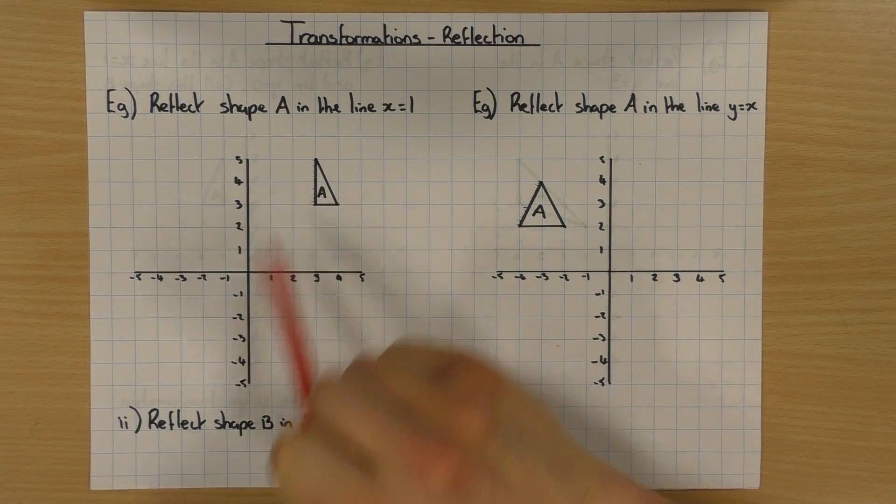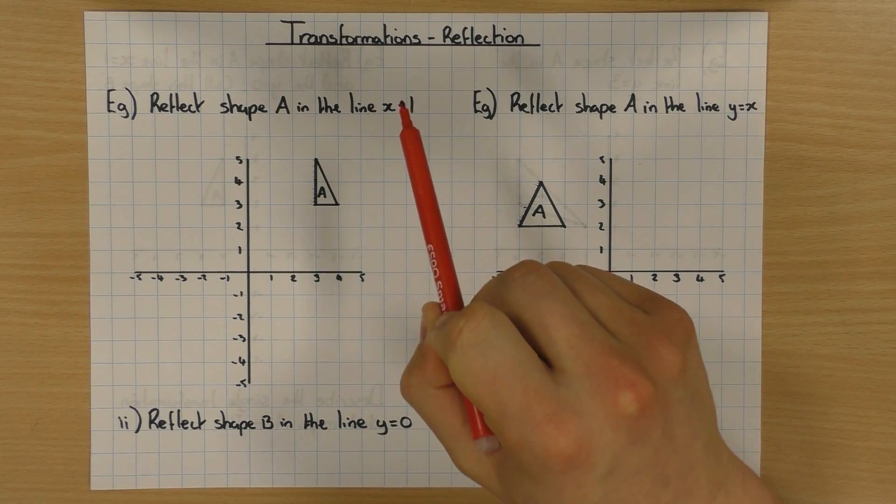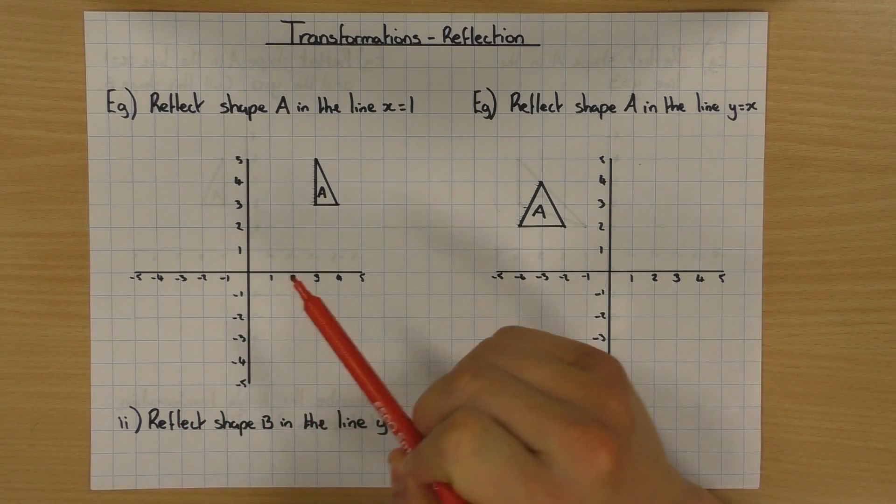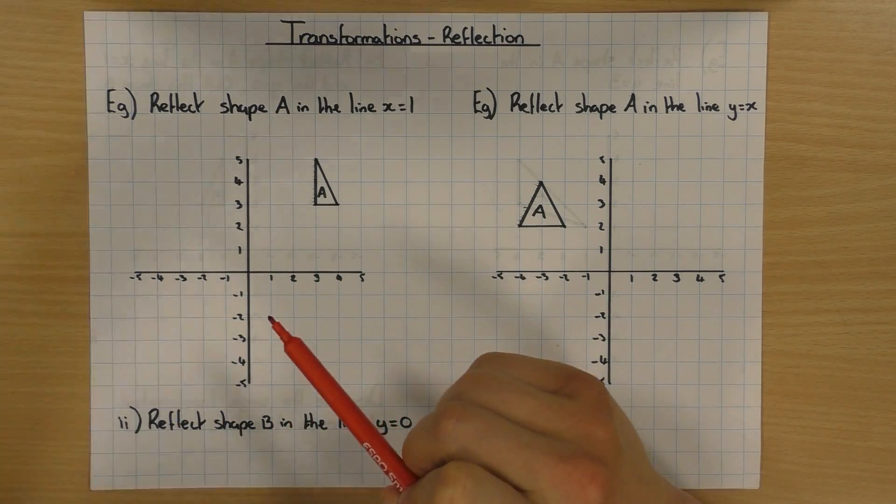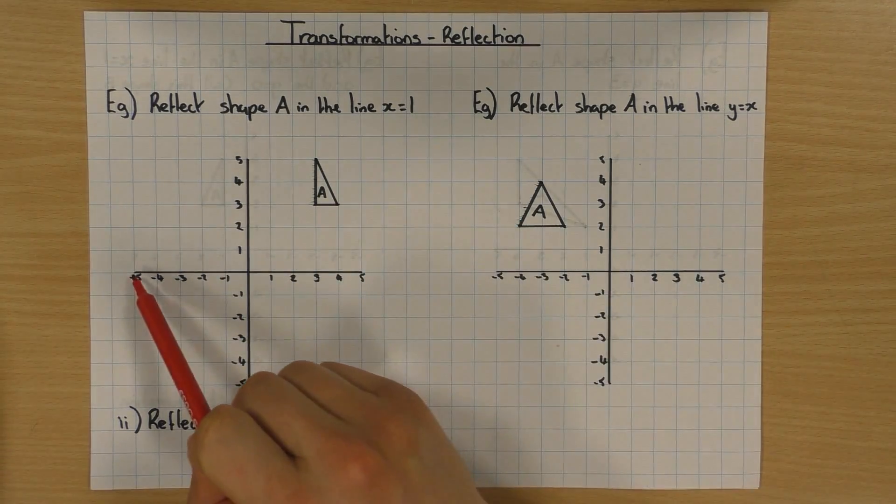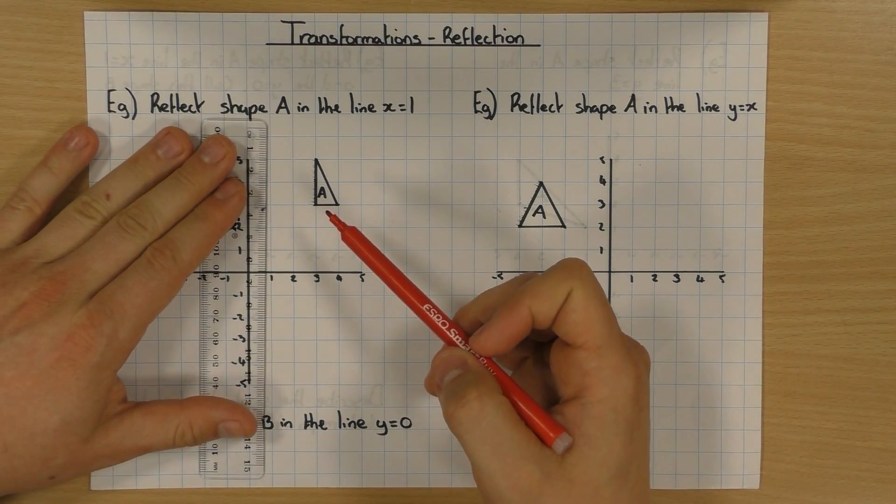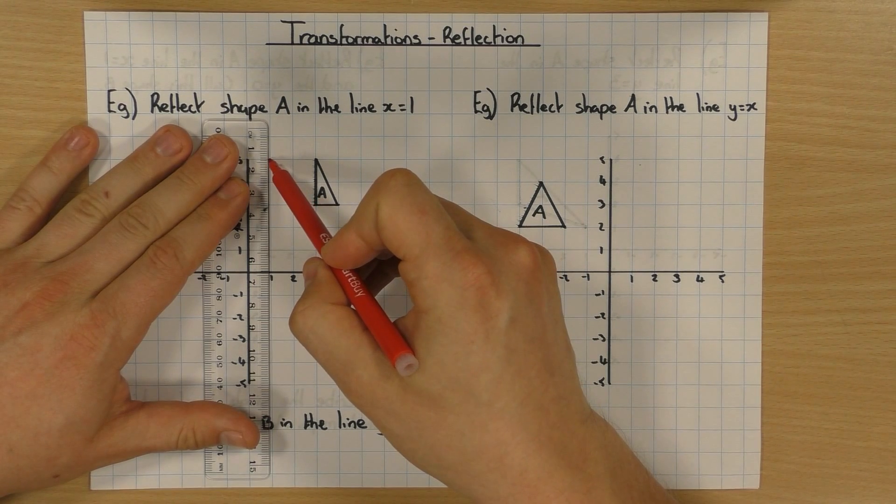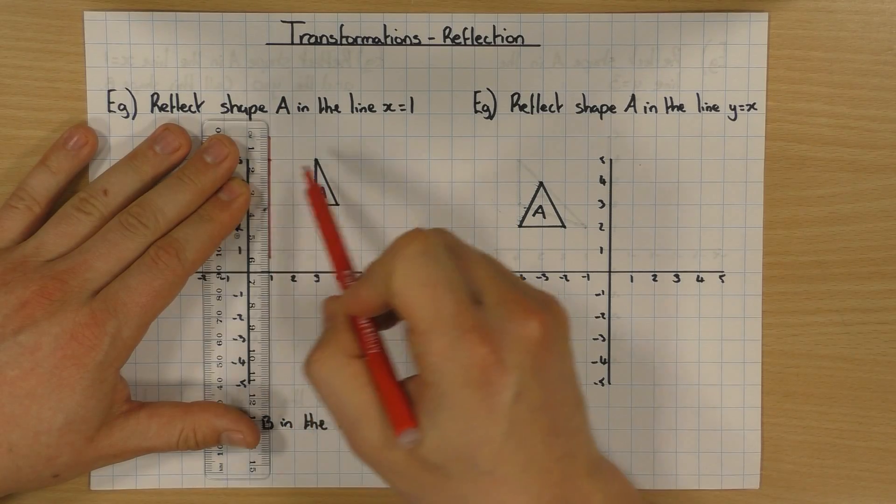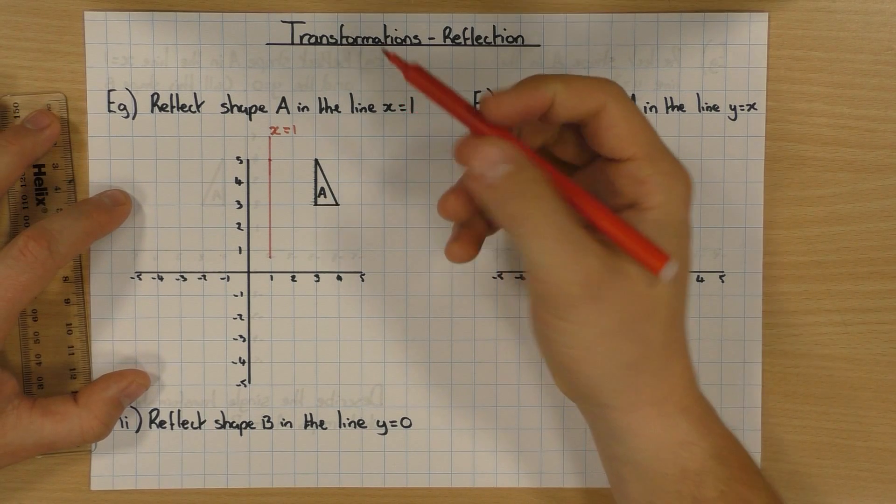So the first one here, I've got my shape A and I want to reflect A in the line X equals 1. In this particular example, I haven't given you the line to reflect it in, we've got to know what that is. It's really nice and easy. So X equals 1, I look to the X axis. X equals 1 is here, so all I do is a nice vertical line going through there. I'm not going to do it all the way because obviously my shape is just here, and I'm reflecting in that line. So X equals 1. Why is that X equals 1? Well,